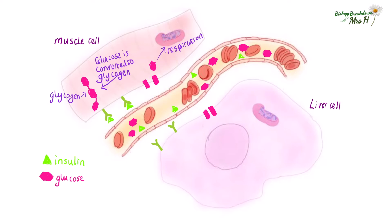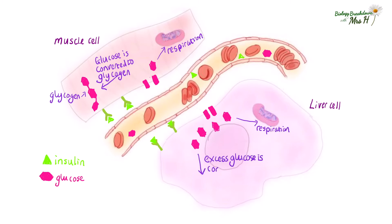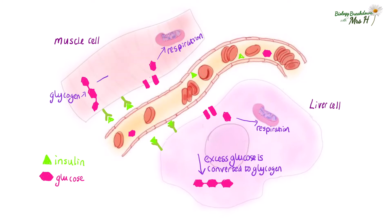This helps to reduce the concentration of glucose in the blood by storing it away as glycogen. Insulin also attaches to receptors on the liver cells. Glucose will diffuse into the liver cell, some of the glucose will be used in respiration, and the excess glucose will be converted to glycogen. Glycogen consists of lots of glucose molecules bonded together, and glycogen can be converted back to glucose.